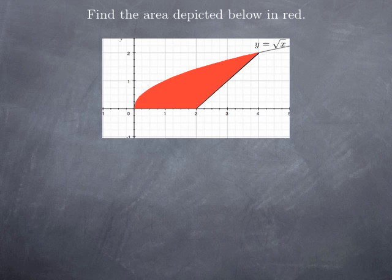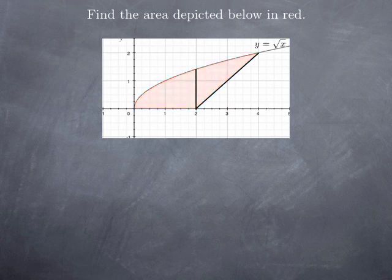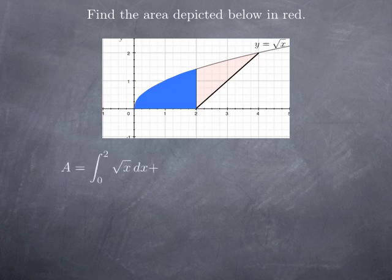So, to do that, we could say, well, we're going to look at this area as the sum of two pieces. We have this blue piece, which is really just the area under the graph of root x over the interval 0, 2. So, that would be just the integral from 0 to 2 of root x dx. And then, we can add this area, which is really the kind of things we've been looking at, the area between two functions.